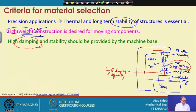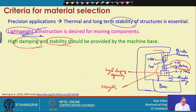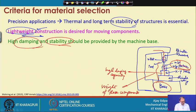You also have to think about stability, because all these components have weight. When everything is loaded on the base, the base will deform even in static mode — and during machining there is dynamic load as well. So the base should have high damping and stability, as it takes most of the load of the machine tool.